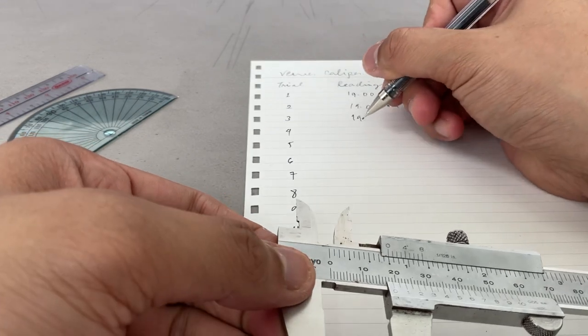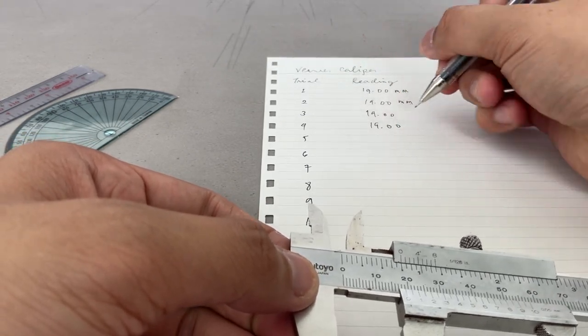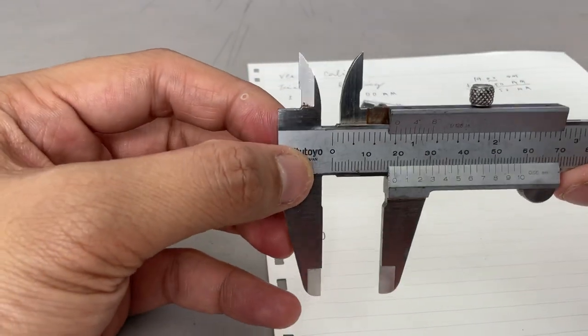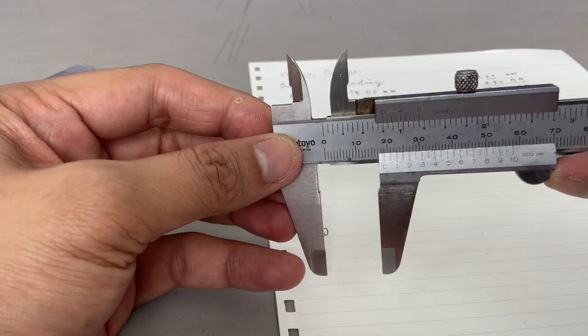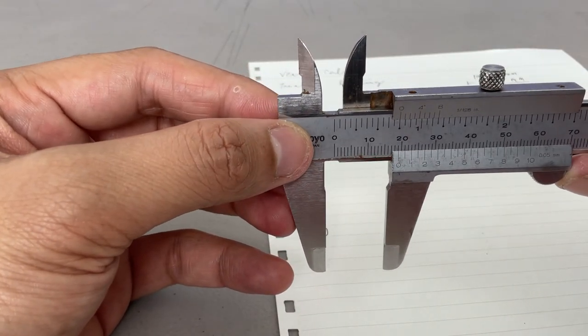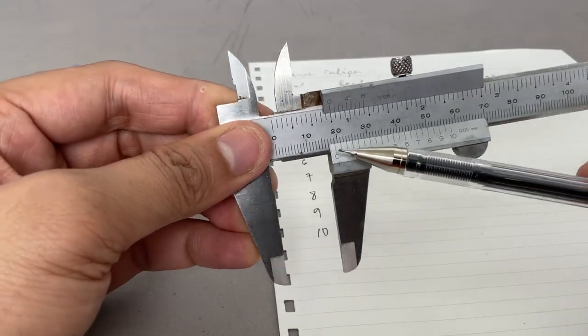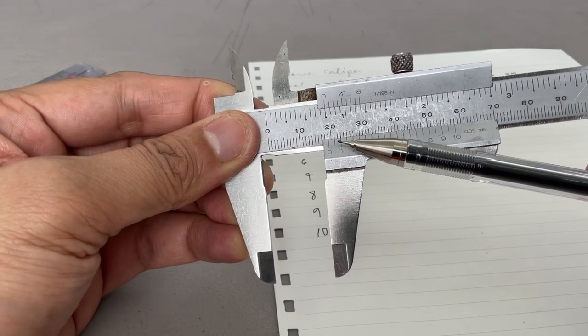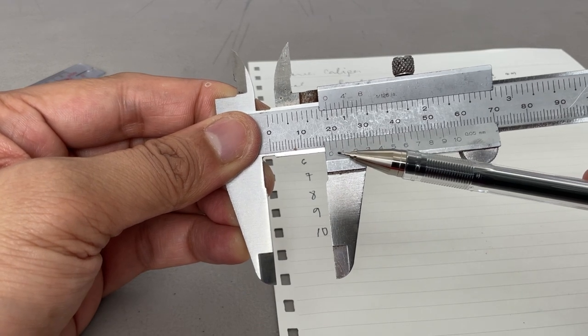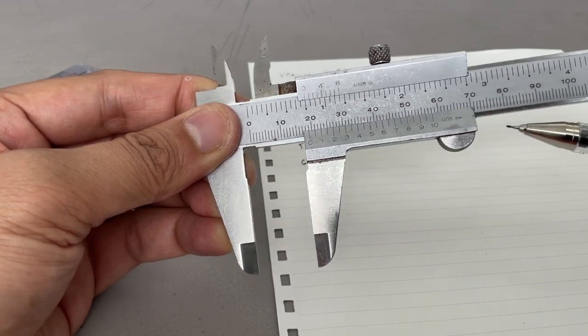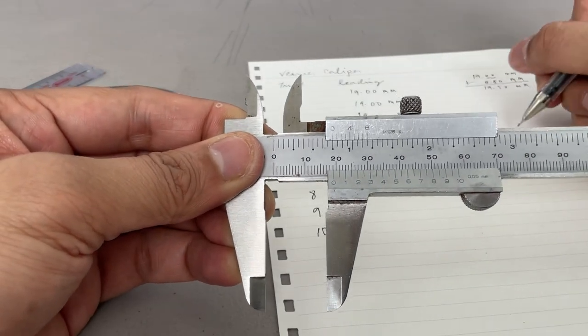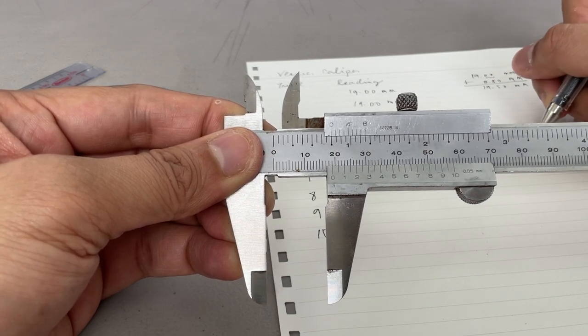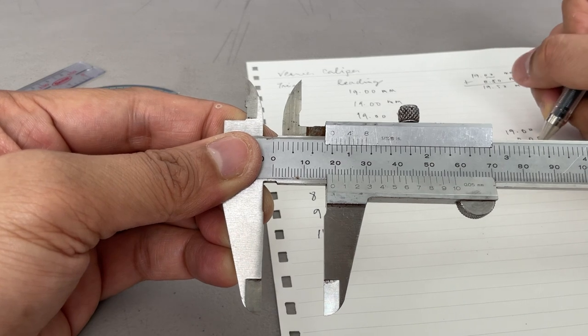So we have another two readings that are 19.00 mm, and this one seems to be not perfectly aligned. 19 point something. So look for a line that perfectly coincides. Between 0 and 2, so 19.05. So for my trial number 5, it's 19.00 plus 0.05, 19.05.